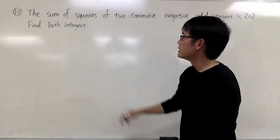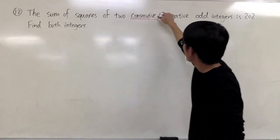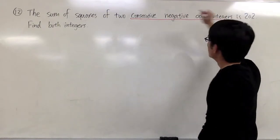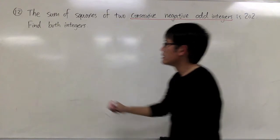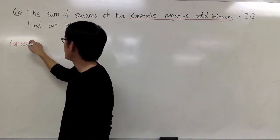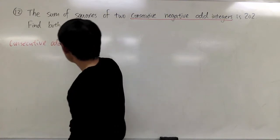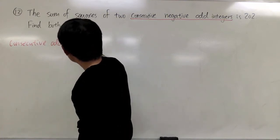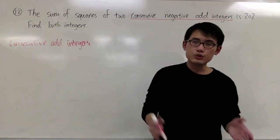The most important thing in this question is that we have to make sure that we understand what it means by consecutive negative odd integers. So let me give some examples first, and let me start with consecutive odd integers. So odd numbers are like 1, 3, 5, 7.